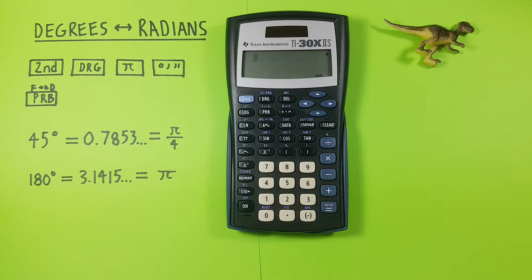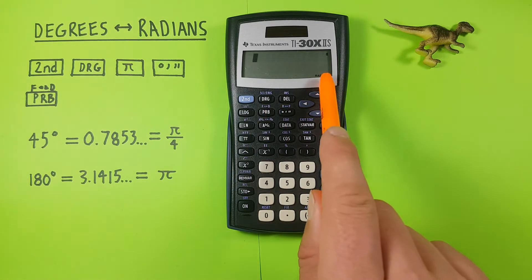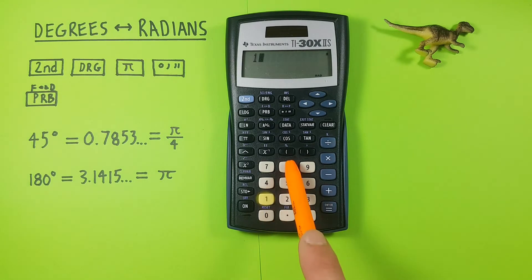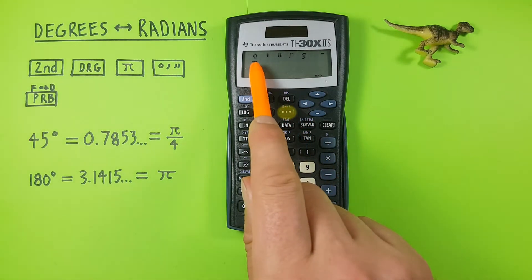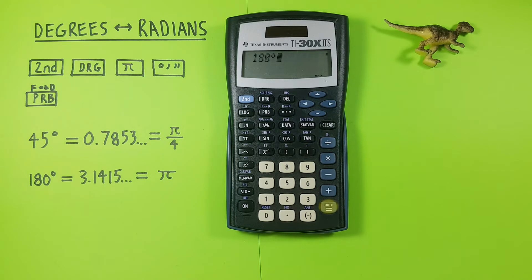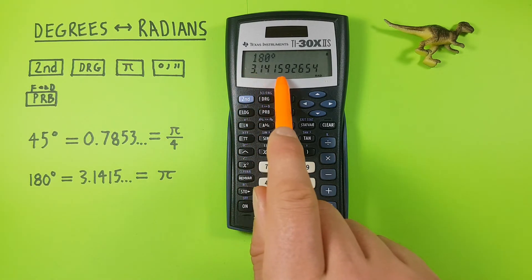Another example, let's say we're given 180 degrees. So since we're in radians mode already, all we have to do is enter our 180, tell our calculator these are degrees with the degree key, select the degree option there,